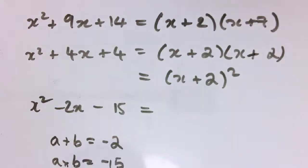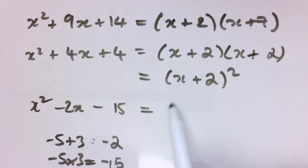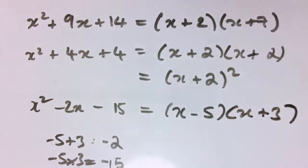And you can see that the numbers that work here are minus 5 and 3. If it was minus 3 and plus 5 that would be plus 2, but minus 5 and 3 is minus 2. Minus 5 times 3 is minus 15. So instead of x plus 2 we've got minus 5 here, so it's x minus 5 times x plus 3, and you can check that that multiplies out to what we want.